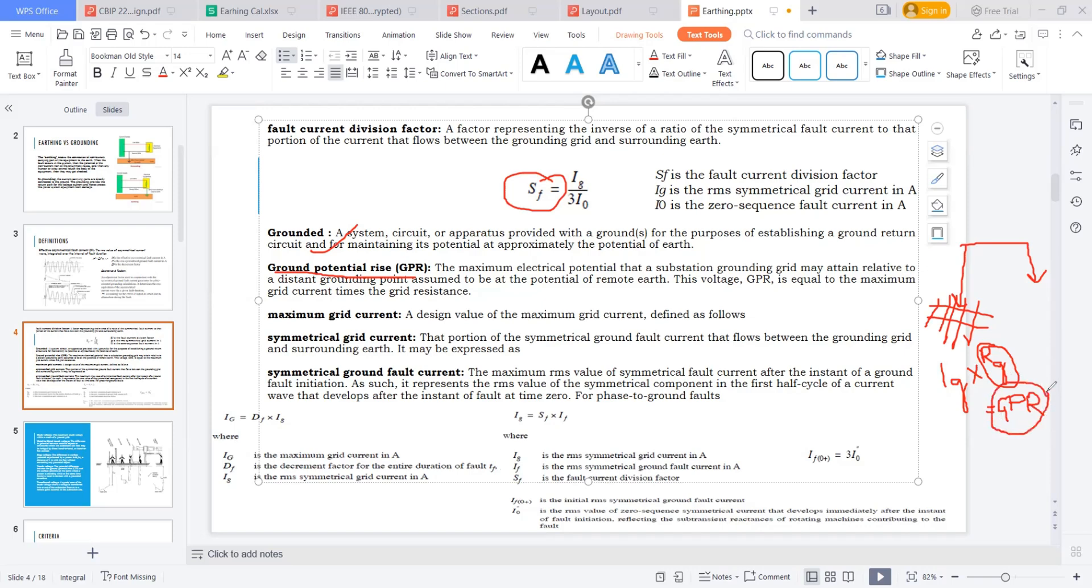This voltage is a concept of how much voltage is raised here relative to remote earth. Suppose the potential here is 0 volts and the potential here is 2400 volts. My GPR is 2400 volts with respect to 0 volts. Generally voltage is calculated from high potential to low potential. Similarly, the maximum electrical potential the substation grounding grid may attain relative to the distant grounding point is GPR. Generally, GPR equals grid current times grid resistance.